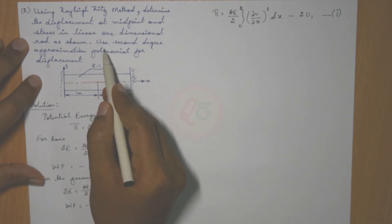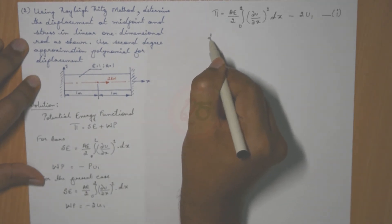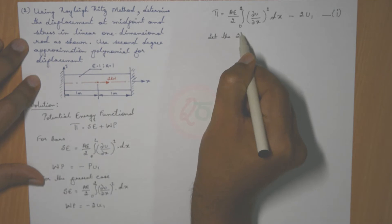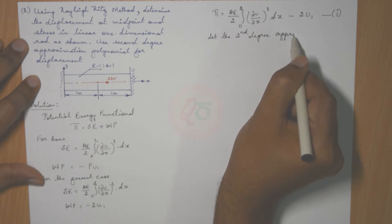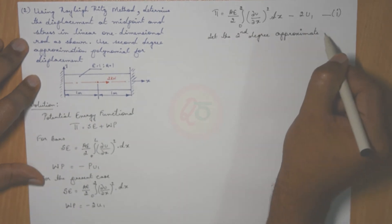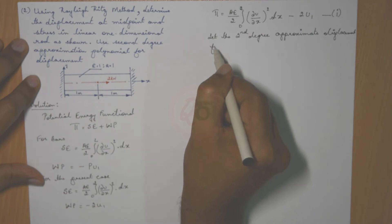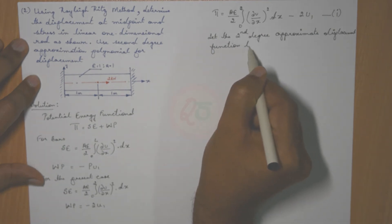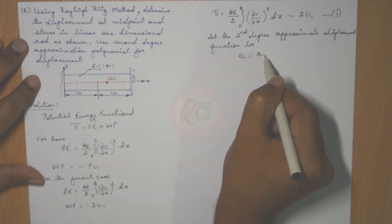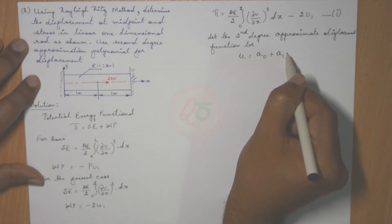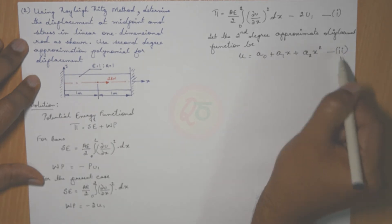The question itself says we need to assume a second degree approximation polynomial. Let the second degree approximate displacement function be u equals a0 plus a1·x plus a2·x². Call this equation 2.